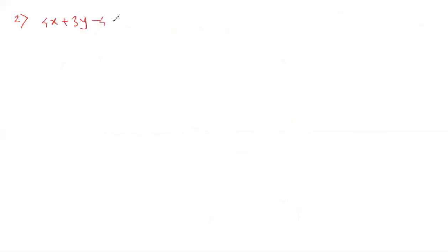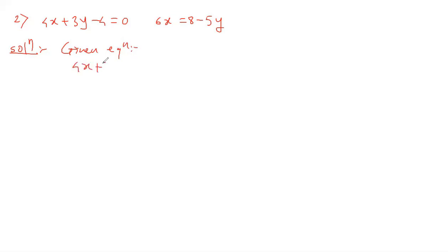Now we solve another part of question 3. The equations are: 4x plus 3y minus 4 equals 0, and 6x equals 8 minus 5y. We rewrite these as: 4x plus 3y equals 4 (equation 1), and 6x plus 5y equals 8 (equation 2).